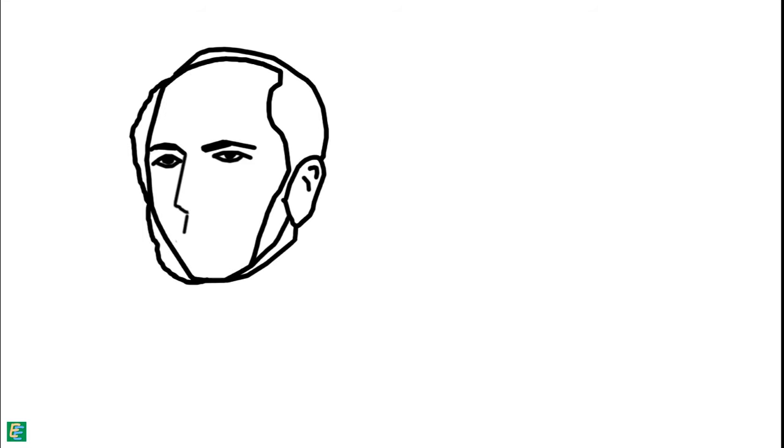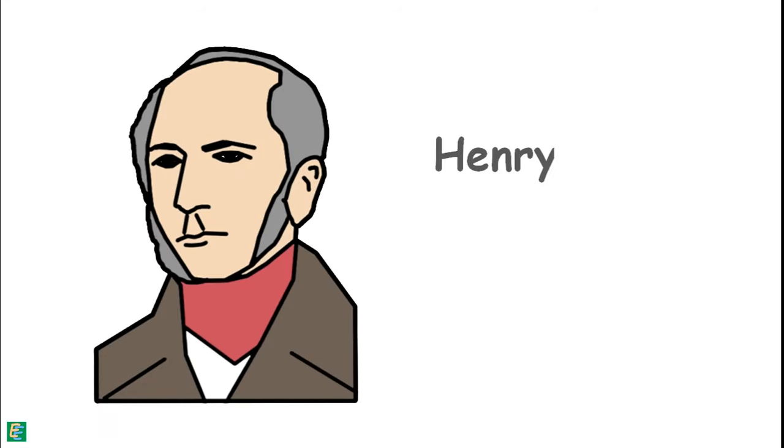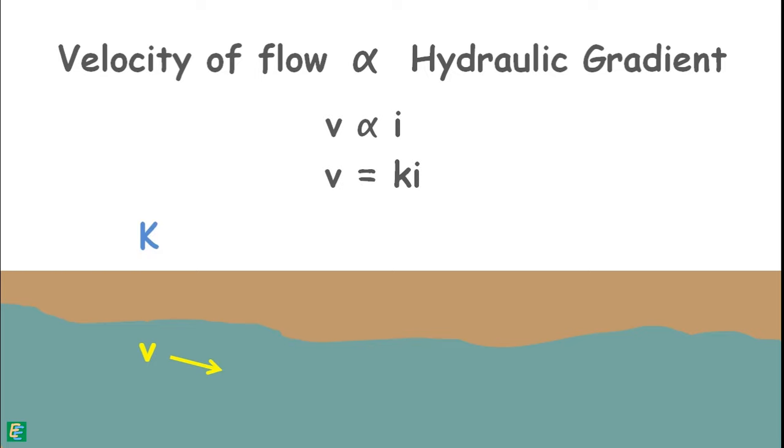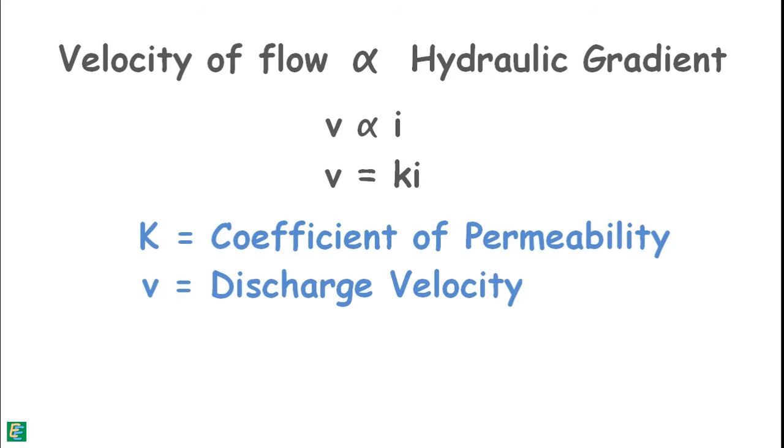This relationship was first observed by French engineer Henry Darcy and he proposed what is known as Darcy's law. He demonstrated after doing experiments that the velocity of flow of liquid between two points in the soil is directly proportional to the hydraulic gradient applied to it. We can write it as v = K × i by adding a proportionality constant K. K is the coefficient of permeability. V is the velocity of flow which is also known as discharge velocity or superficial velocity. I is the hydraulic gradient.